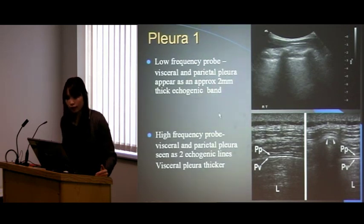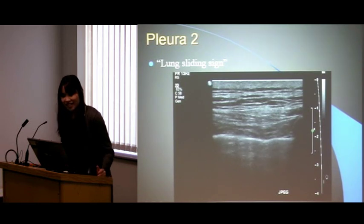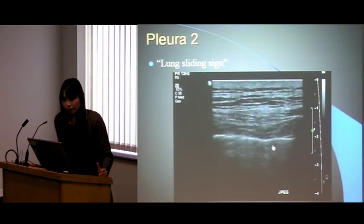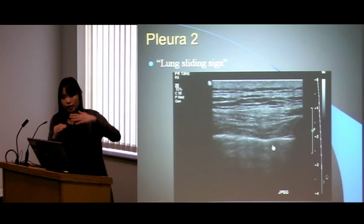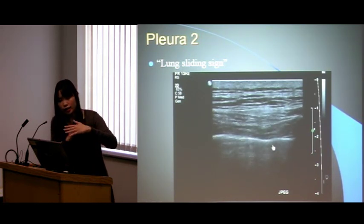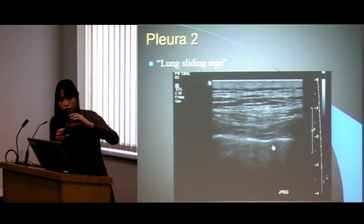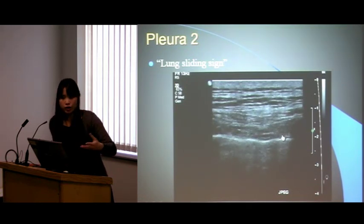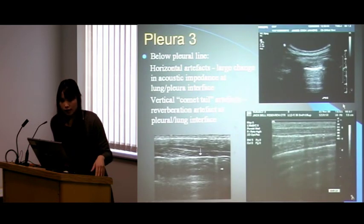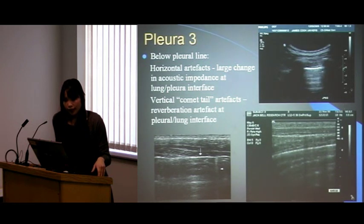There's the lung sliding sign, which a lot of us have talked about. You can see the soft tissues and pleura, and as the patient breathes, the visceral pleura slides — you can see that sliding against the soft tissues. This has to be seen dynamically to be able to differentiate where the pleura is.